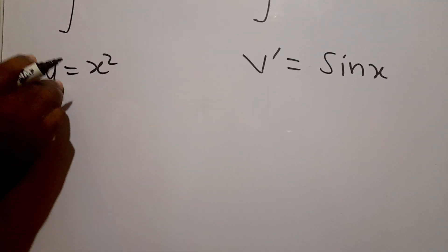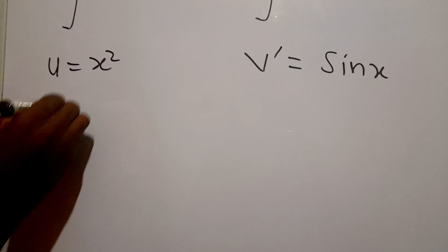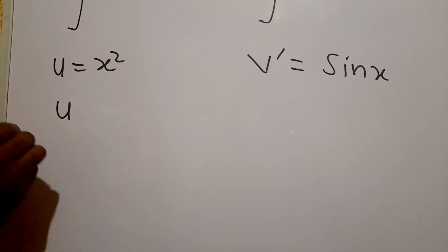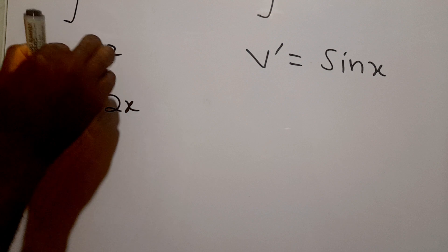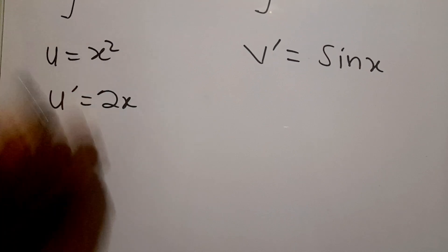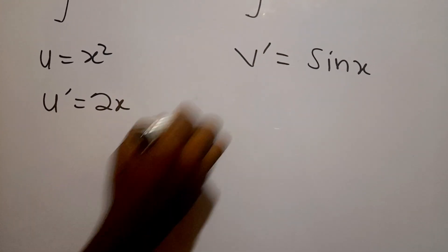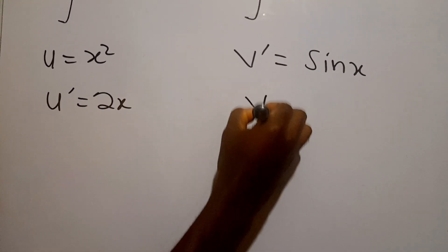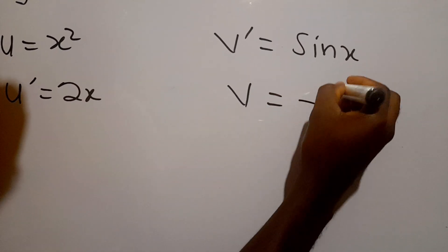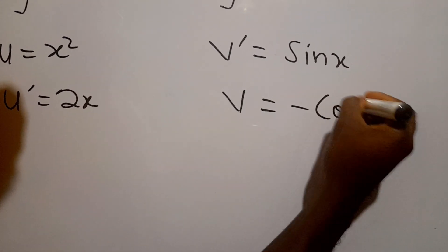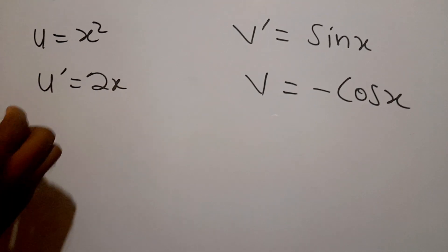Now we need u prime, so we differentiate u. U prime will be equal to 2x — that's the differential of x squared. And to get v we integrate v prime, so v will be equal to the integral of sine x, which gives negative cos x.